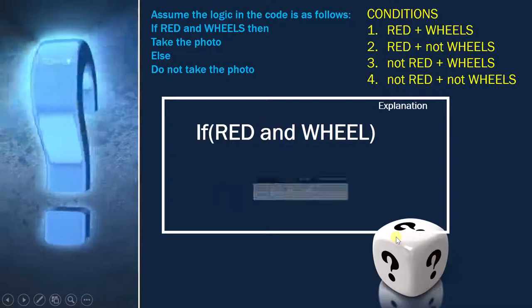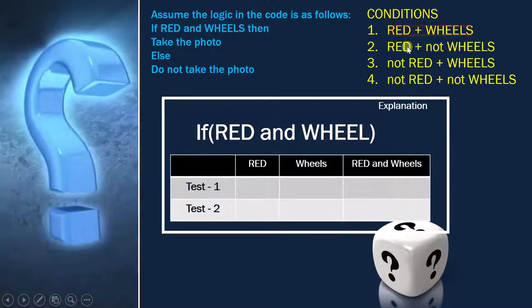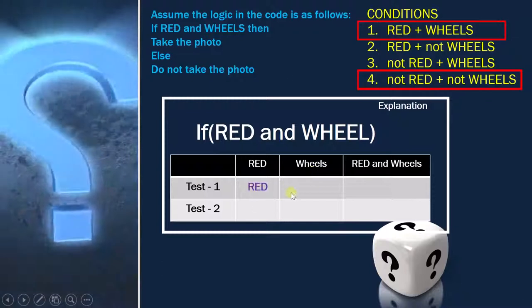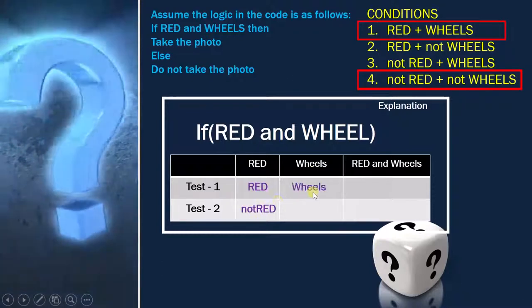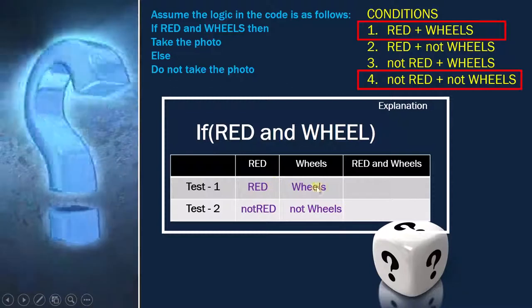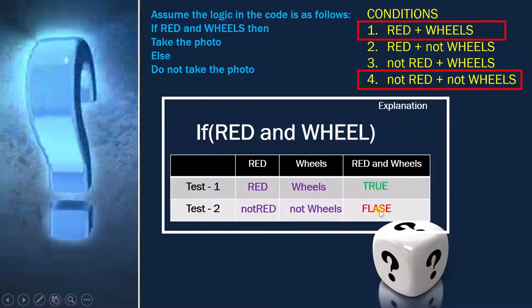And now moving towards the last option, where we will see the first option and the fourth option. So this is red, this is not red. This is wheels, this is not wheels. Finally, if you combine these two options, red and wheels, true. Not red, not wheels, false.